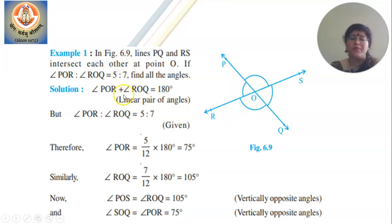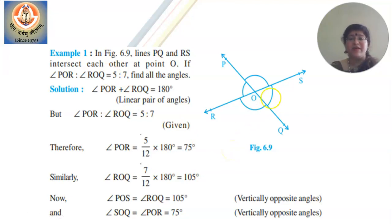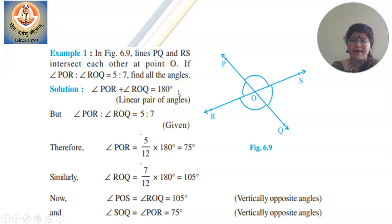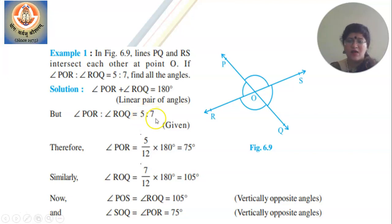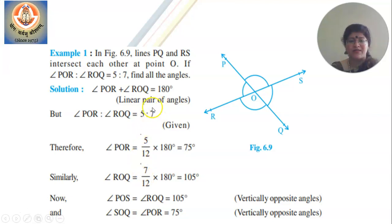Whenever you come across a problem related to ratio, one method is to use the common multiple as X — that is one way of doing it. In the next slide you will see another method. Here, take angles POR and QOR — are they not angles in a linear pair? So their total equals 180 degrees. The ratio is 5 to 7, meaning 5 parts out of 12 and 7 parts out of 12. So angle POR is 5 over 12 into 180 degrees, which is 75 degrees. Angle ROQ is 7 out of 12, so the answer is 105 degrees.